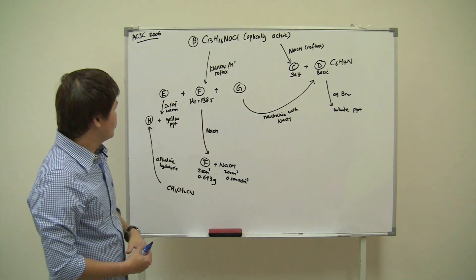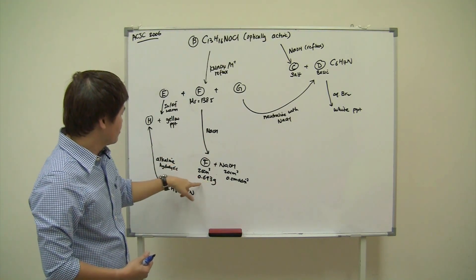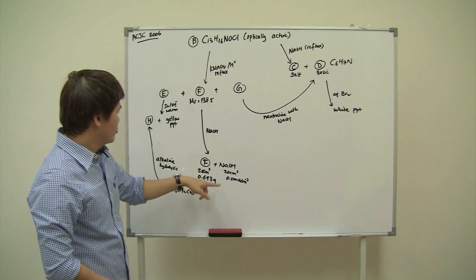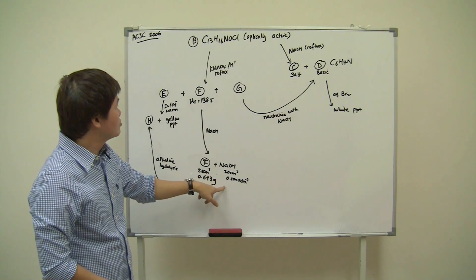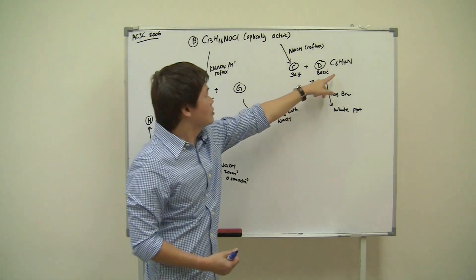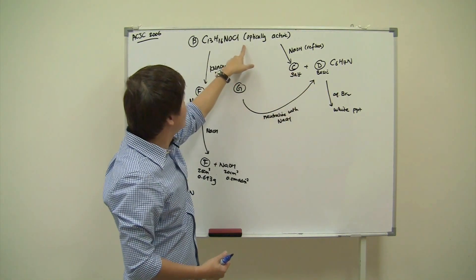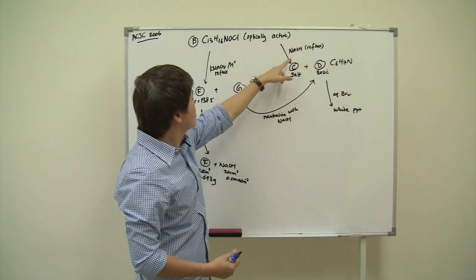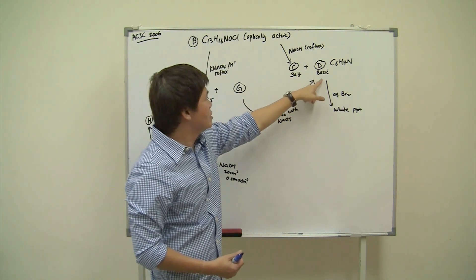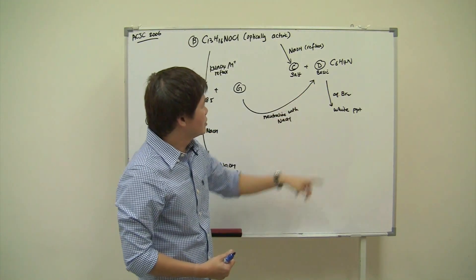For compound F, its MR is 138.5. On neutralization with sodium hydroxide, 25 cm³ of F containing 0.693 g reacts with 20 cm³ of NaOH at 0.5 mol dm⁻³. The third compound G, on neutralization with hydroxide, gives compound D. D is derived from B by reflux with hydroxide, which produces two compounds: C (a salt) and D. D is a basic compound with formula C₆H₇N, and it reacts with aqueous bromine to give a white precipitate.